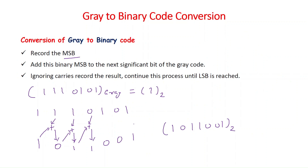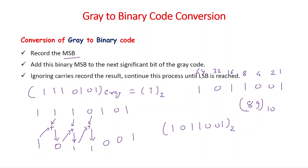To convert grey code to decimal, first convert the grey code to binary, then apply binary weights 1, 2, 4, 8, 16, 32, 64 to get the decimal value. For example, binary 1011001 equals 64+16+8+1 = 89 in decimal. So the grey code number is equivalent to 89 in decimal. To go from decimal to grey code, reverse the process: first convert decimal to binary, then binary to grey code.